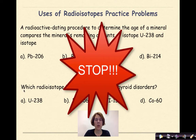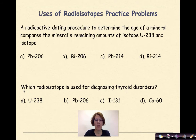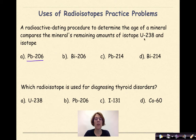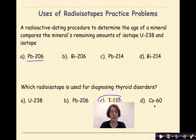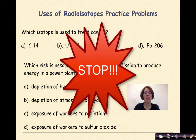More practice problems. A radioactive dating procedure to determine the age of a mineral compares the mineral's remaining amount of isotope uranium-238 with what isotope? The correct answer is lead-206, because uranium-238 decomposes to this more stable form. Which radioisotope is used in the diagnosis of thyroid disorders? The correct answer is iodine-131. Uranium-238 has an extremely long half-life, and cobalt-60 is used more in treating cancerous tumors.